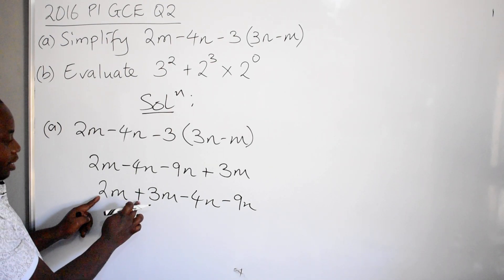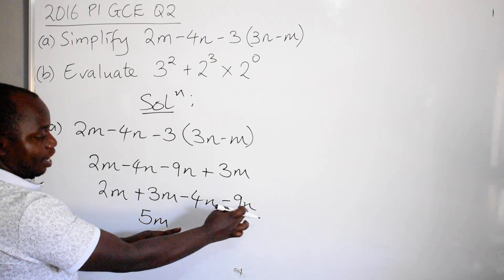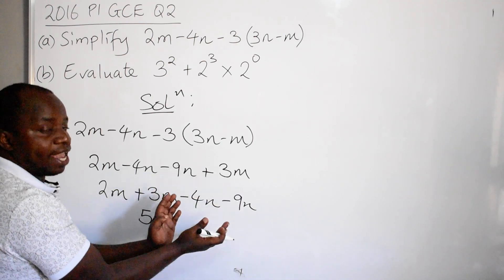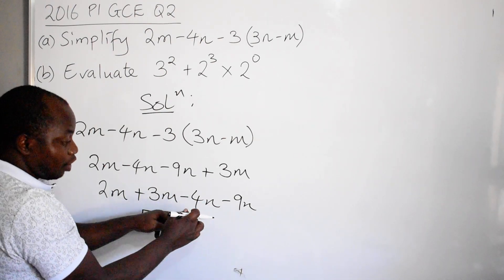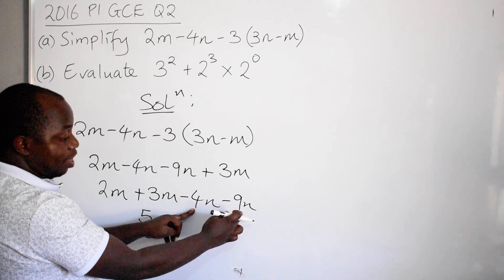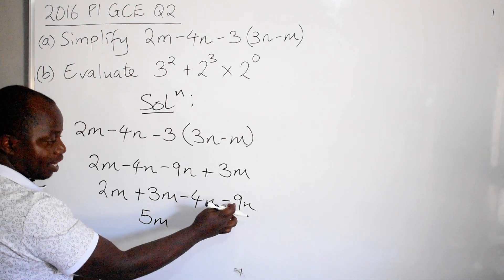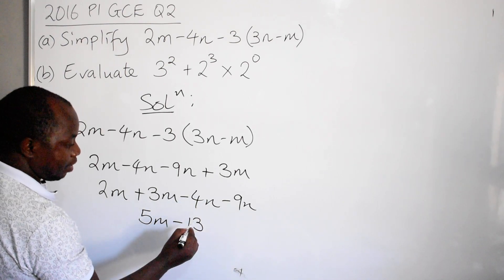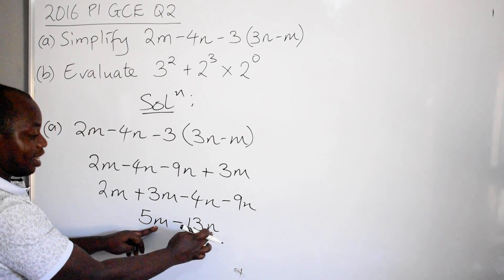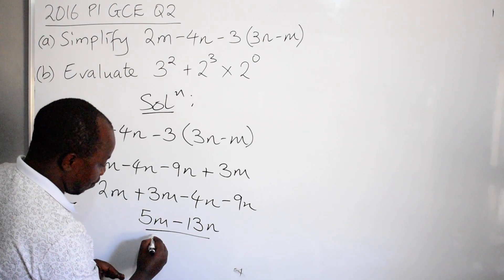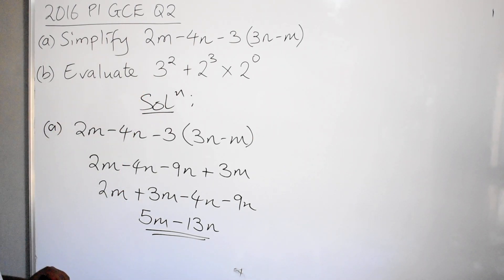You write them like that. Like terms can now be added. For the m terms: 2m plus 3m gives you 5m. For the n terms, we have negative 4n and negative 9n — same signs — so you add: 4 plus 9 gives 13, and the sign comes from the bigger number 9, which is negative. So this gives negative 13n. There is nothing more to be done since m and n are not like terms. So 5m minus 13n is your answer.